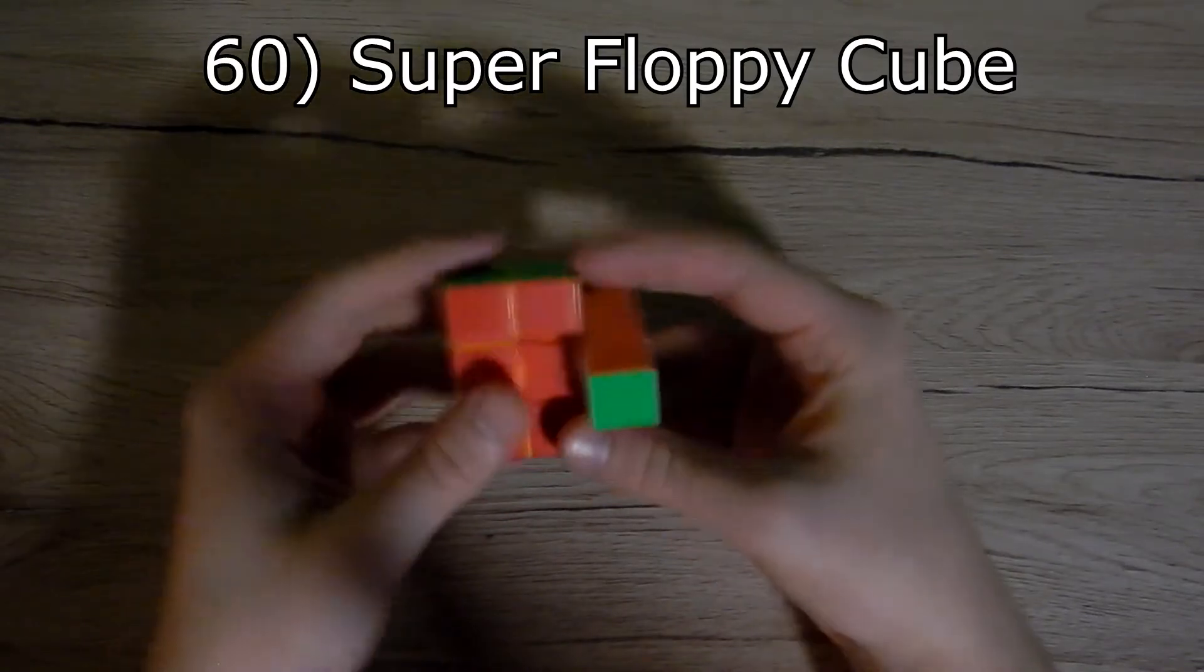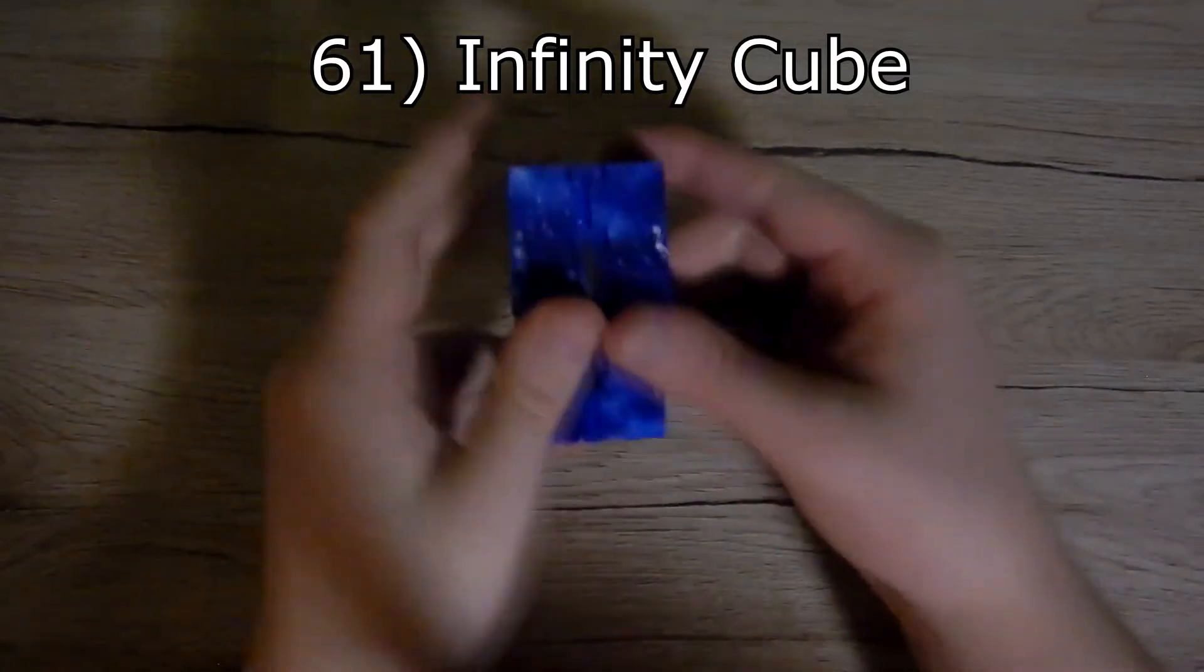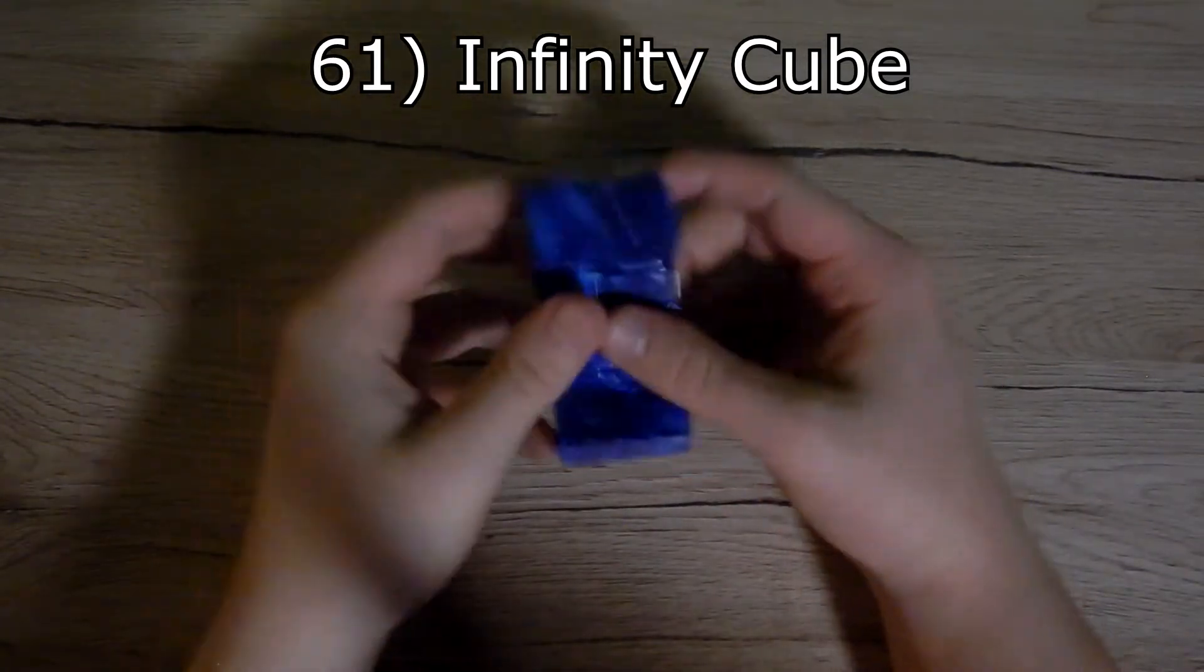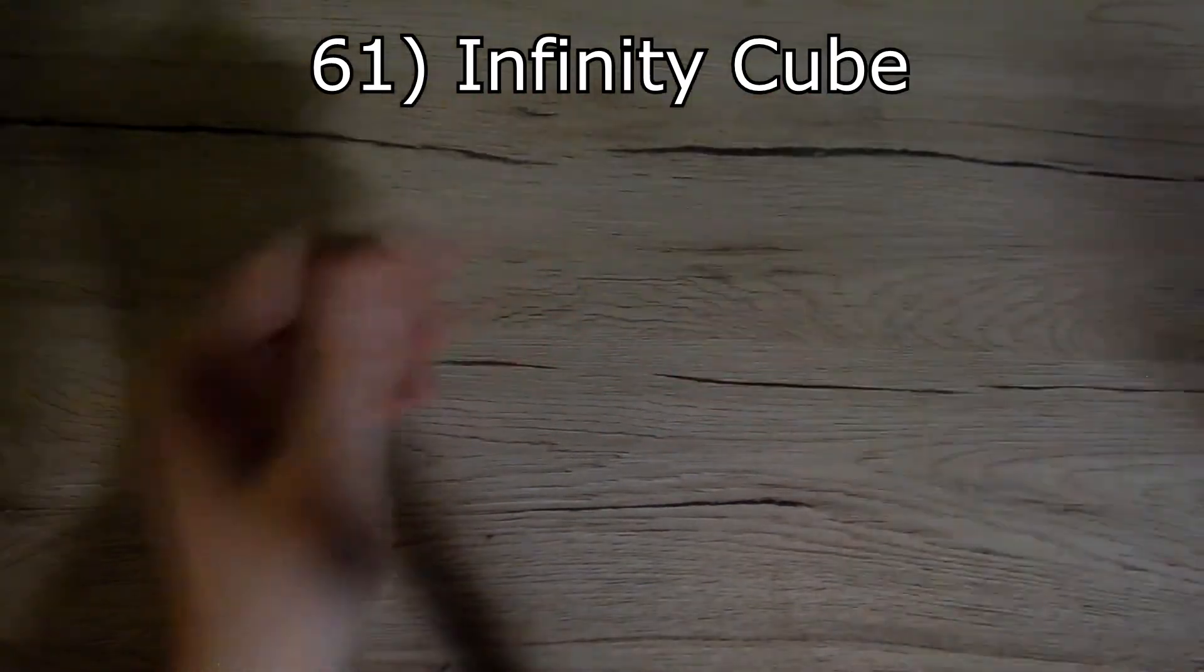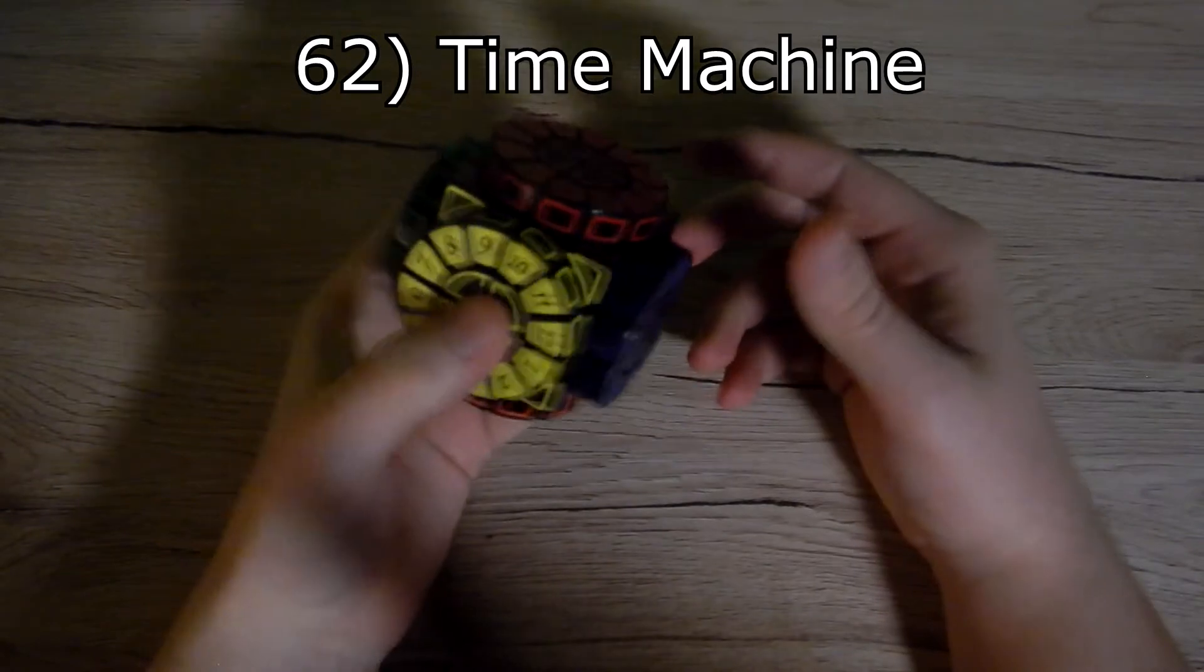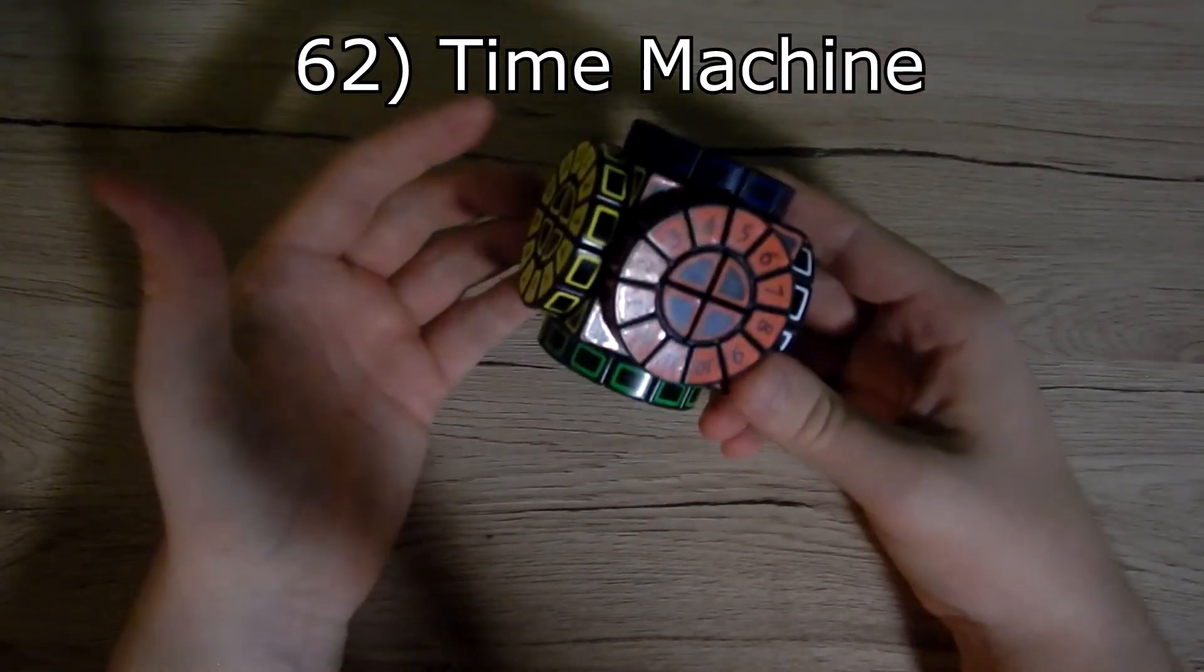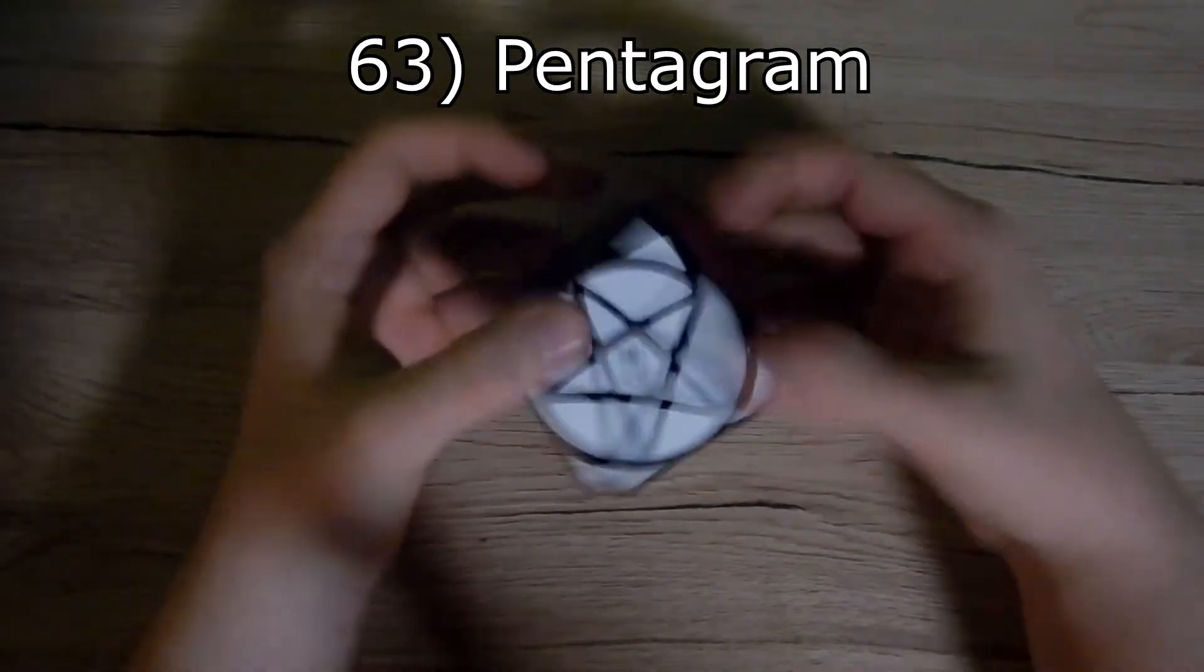Now for the original cubes. First we have the super floppy cube. It's very easy, my brother can solve it. Then we have infinity cube. It's not exactly a puzzle but it is a cube and I counted it to my collection. Next we have a time machine. It is very easy but it looks so cool and hard, so you look like a genius.